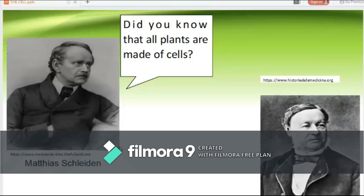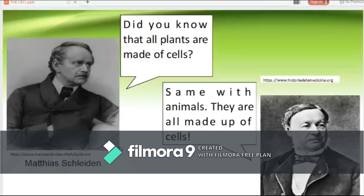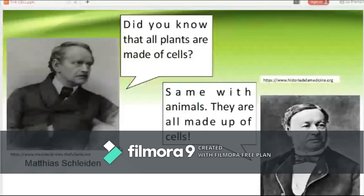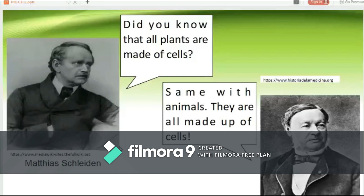Another scientist, Theodor Schwann, a German physiologist, made similar microscopic observations on plants and animal tissues. After a conversation with Schleiden, Schwann realized that similarities existed between plant and animal tissues, concluding that animal tissues are also all made up of cells. These two pioneers' findings laid the foundation for the idea that cells are the elemental components of plants and animals.